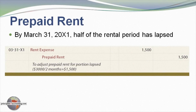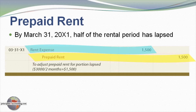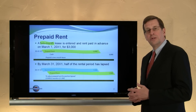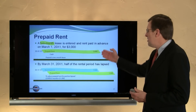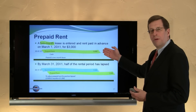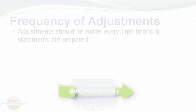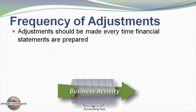At March 31st, if we were to prepare financial statements, we would want them to be up to date, so an adjusting entry would be needed. That adjusting entry includes a credit to prepaid rent — half of the $3,000 has now been consumed, the service has been received, and that amount is transferred to rent expense. At the end of March, $1,500 of the original $3,000 would still remain in the prepaid account, and that would become April's expense.